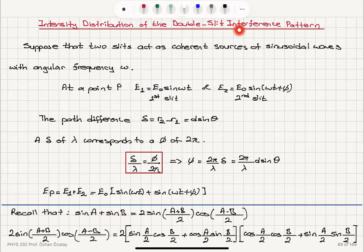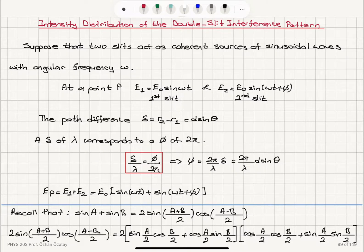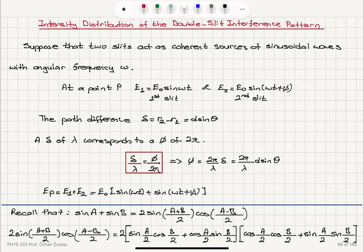We will analyze the intensity distribution of the double slit interference pattern. We have two slits acting as coherent sources of sinusoidal waves with angular frequency omega. Light is an electromagnetic wave with an electric field component and magnetic field component. Concentrating on the electric field component at a point P on the screen, we have E0 sin(ωt) from the first slit and E0 sin(ωt + φ) from the second slit.